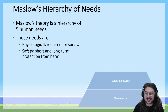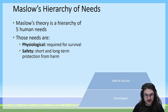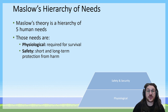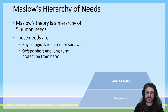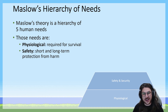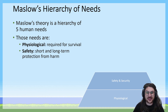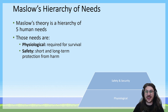Maslow says that once you've achieved your physiological needs, you'll stop being motivated to pursue those and will next be driven to achieve safety, both short and long term. This can be as simple as not wanting to be attacked by a vicious animal, to wanting to ensure you have the capacity to continue to feed yourself and care for the people that make up your family unit.